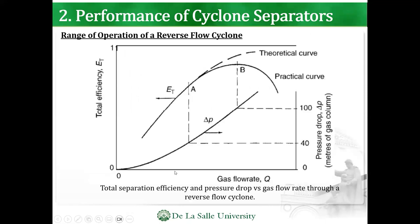This graph shows the total separation efficiency and pressure drop versus gas flow rate through a reverse flow cyclone. The x-axis is the gas flow rate and the y-axis is efficiency. You have two curves: one for pressure drop and one for separation efficiency. For example, at point B, projecting upward yields the highest efficiency. That highest efficiency happens at 100 meters of gas column pressure drop.